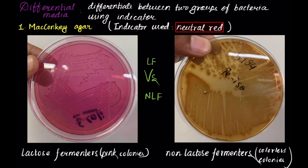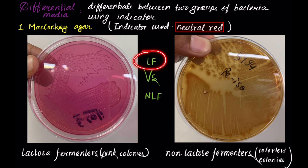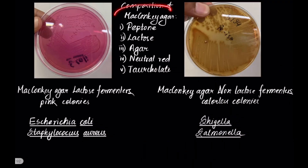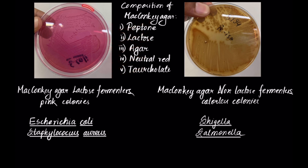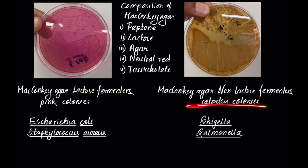There are two differential media you need to know for practical examination. First is MacConkey agar. MacConkey agar uses the indicator neutral red. It is used to differentiate between lactose fermenters and non-lactose fermenters. Lactose fermenters appear as pink colonies on the medium, and non-lactose fermenters appear as colorless colonies. MacConkey agar is composed of peptone, lactose, agar, neutral red as the indicator, and bile salts.